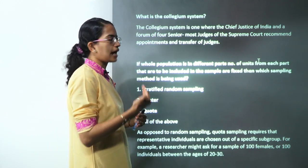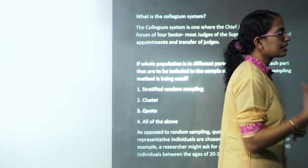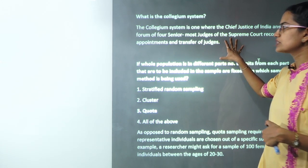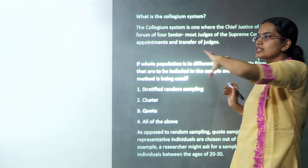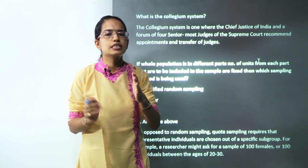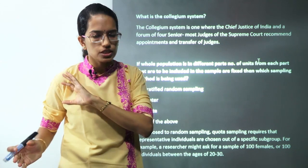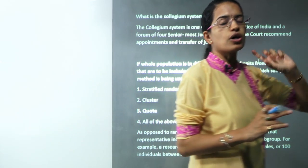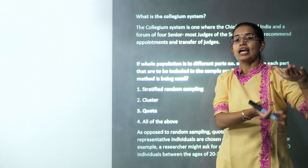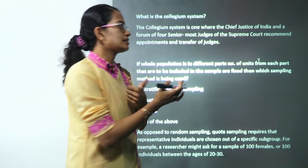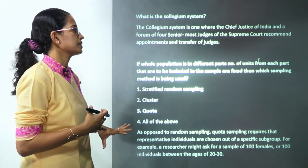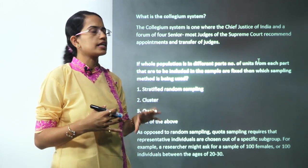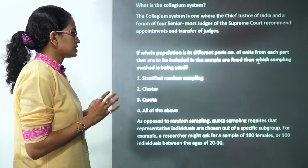The collegium system has been very much in the news. The collegium system is regarding the appointment of judges of the Supreme Court. It is formed by the Chief Justice of India and the four senior-most judges of the Supreme Court. The benefit is that it keeps the judiciary independent from the legislative and executive branches. However, it was recently in the news because under criminal cases, appointments have to be cleared by the executive, and many names were kept pending — proving a kind of bias in appointment. The collegium system recommends the appointment and transfer of judges.